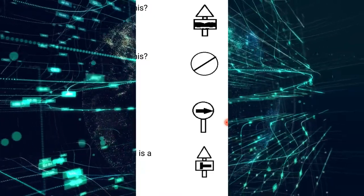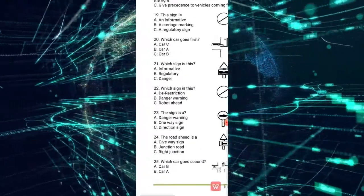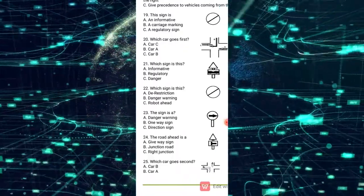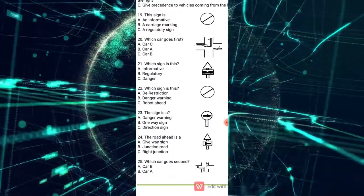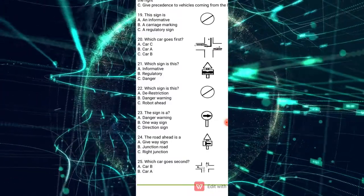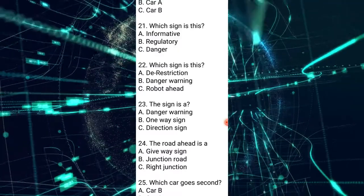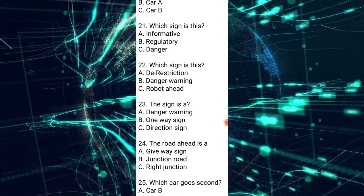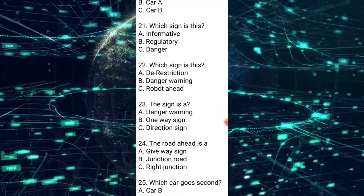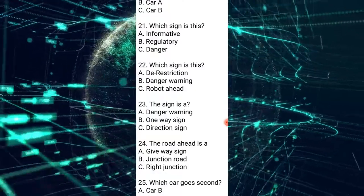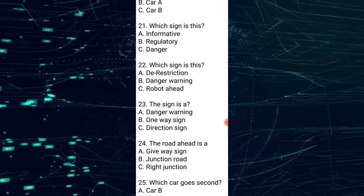Number 23: this sign — circles are generally used for regulatory signs. Looking at the answers: A is danger warning, B is a one-way sign, C is a direction sign. A danger warning sign is shown by a triangle, not a circle. A direction sign is an informative sign — it informs you of the way without regulating anything. A one-way sign is a regulatory sign using a circle, regulating that traffic may only go one way. So the answer for number 23 is B — a one-way sign.